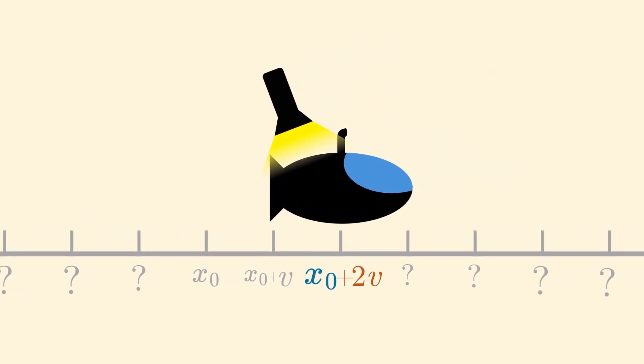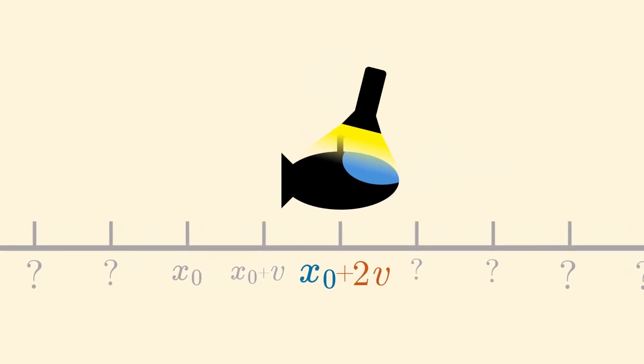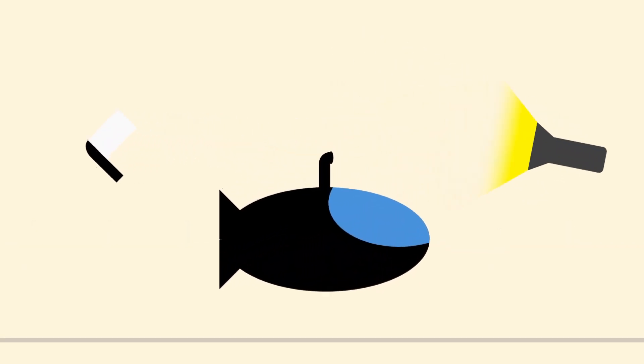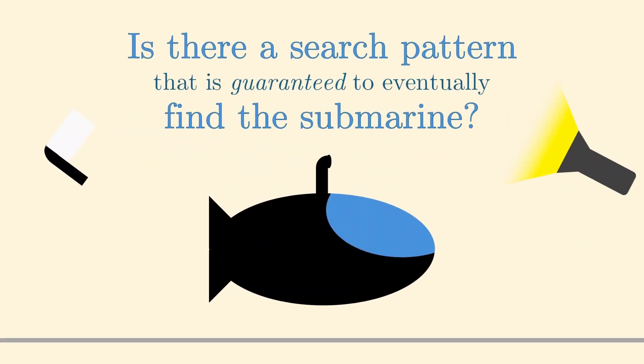If you happen to search the position where the submarine is, it raises the white flag and surrenders. You win. Now the question is, is there a search pattern that is guaranteed to eventually find the submarine?